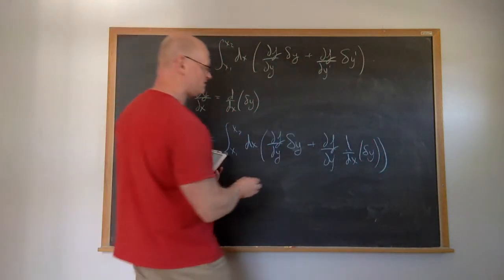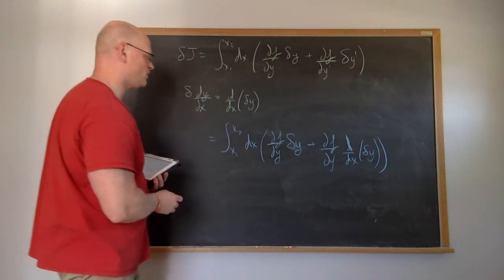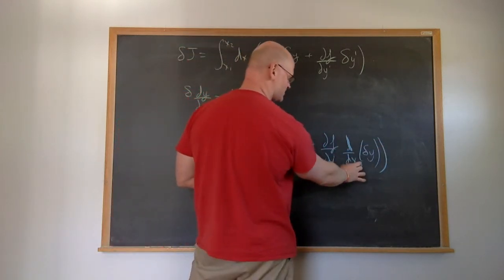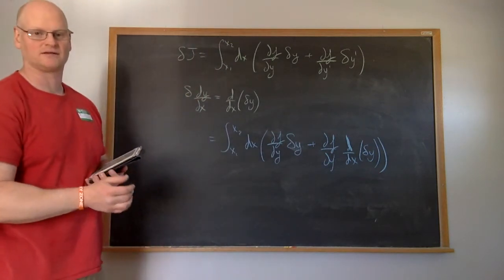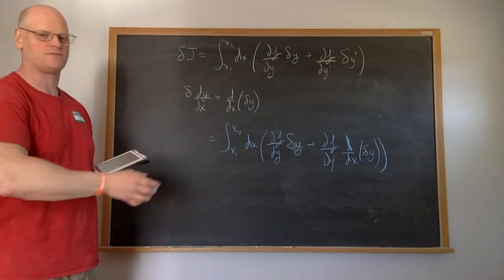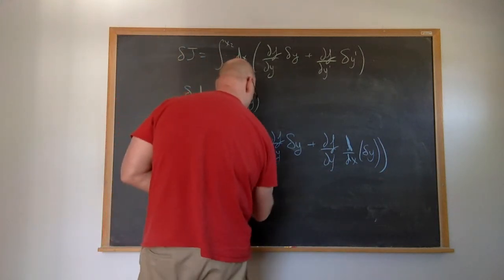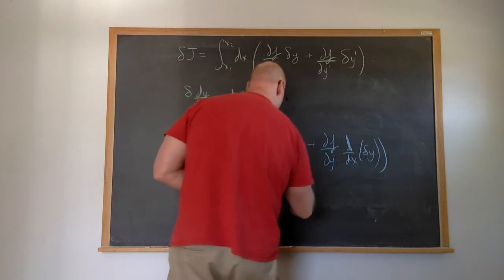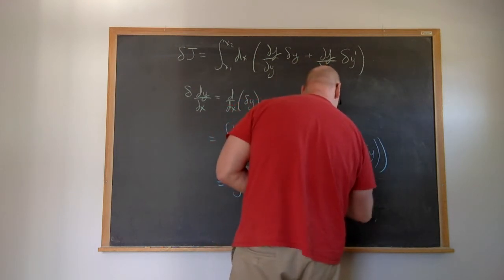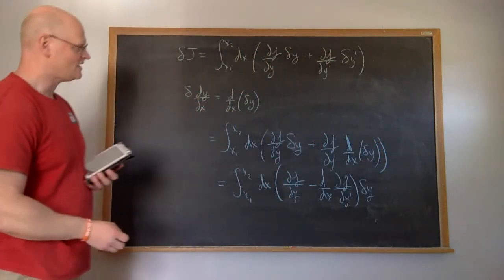Using this, we can put that back into the expression. This becomes the integral from x1 to x2 dx of the partial of f with respect to y times the variation, plus the partial of f with respect to y prime times the derivative of the variation. Since the variation must be arbitrary, we want this whole thing multiplied by the variation. We do that by transferring this derivative using integration by parts. The boundary term vanishes, giving us the integral from x1 to x2 dx of the partial of f with respect to y minus d/dx of the partial of f with respect to y prime, all times the variation of the path.